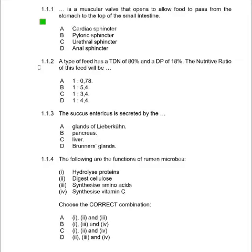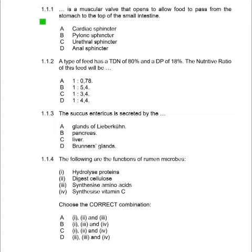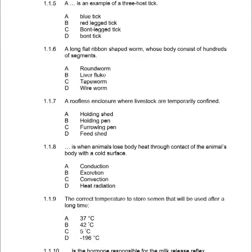Question 1.1.4: Functions of rumen microbes include? Rumen microbes play a crucial role in livestock digestion. These microbes are like tiny helpers that break down complex foods. Answer A: All of the above — hydrolyze proteins, digest cellulose, and synthesize amino acids.